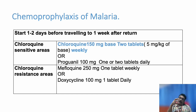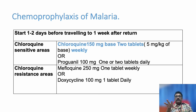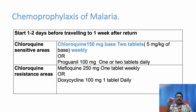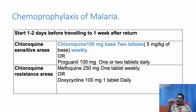For chemoprophylaxis — if a patient is going to an endemic area — in chloroquine-sensitive areas, take chloroquine 150 mg base (2 tablets) weekly. In chloroquine-resistance areas, mefloquine 250 mg one tablet weekly can be given. Doxycycline is also available and is the same drug given for flood-area prophylaxis to prevent leptospirosis or cholera, but mefloquine is a better drug than doxycycline for malaria prophylaxis.